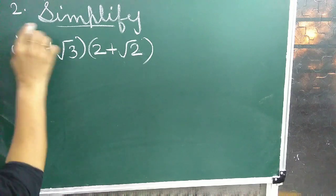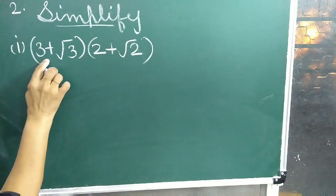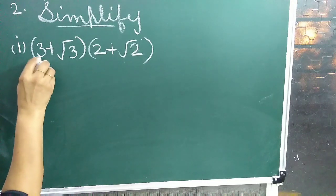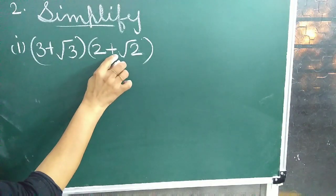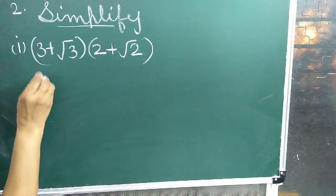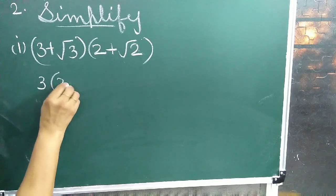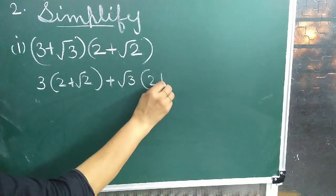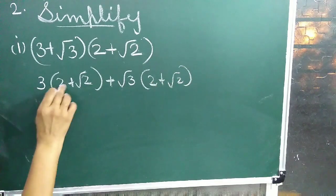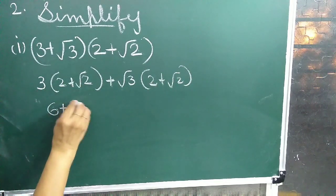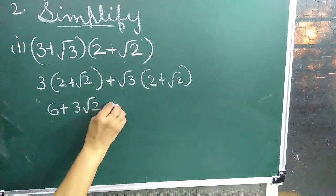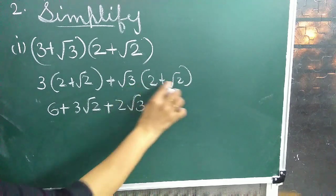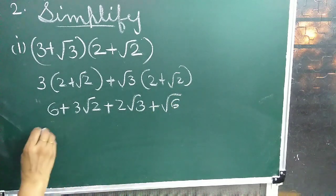Question 2: Simplify the following. First question: 3 plus root 3 into 2 plus root 2. Multiply each term: 3 into 2 plus root 2, plus root 3 into 2 plus root 2. That gives 6 plus 3 root 2 plus 2 root 3 plus root 6.